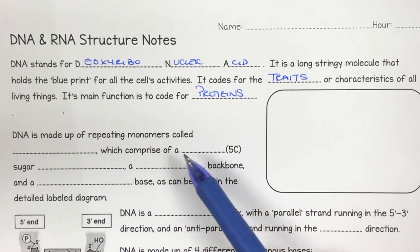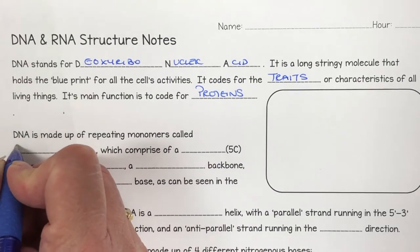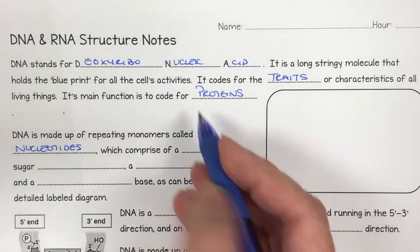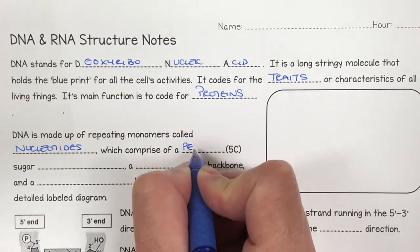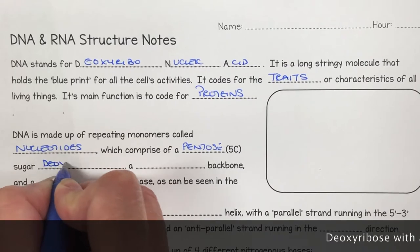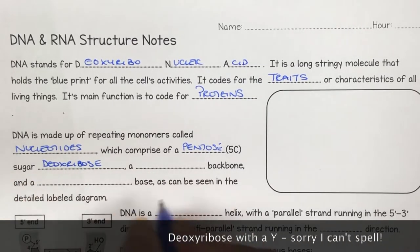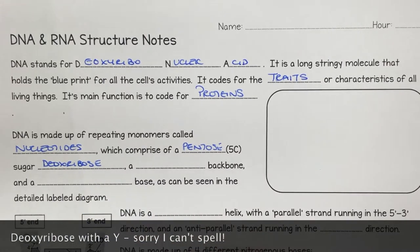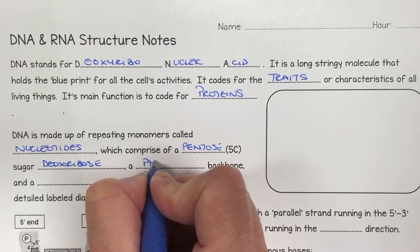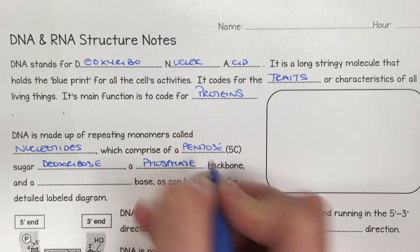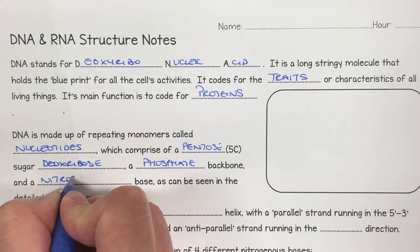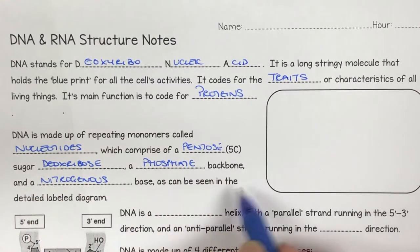DNA is made up of repeating monomers, and these monomers are called nucleotides, which comprise of a pentose — meaning it has five carbons — so pentose sugar. In this case it's deoxyribose, which is different from RNA, which is just ribose, and we'll talk about that momentarily. It also has a phosphate backbone, and finally it has a nitrogenous base, as you can see in the diagram here.